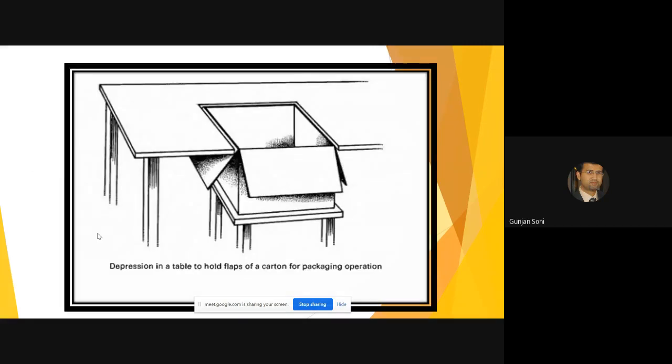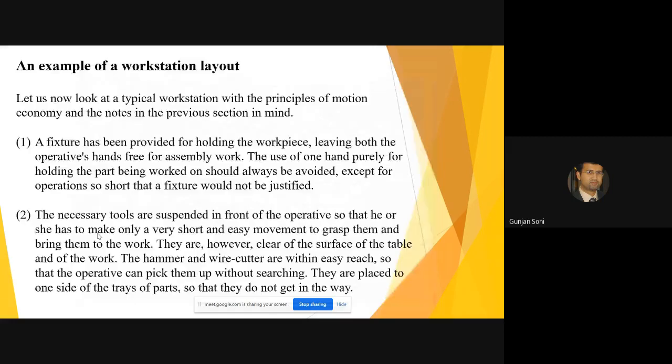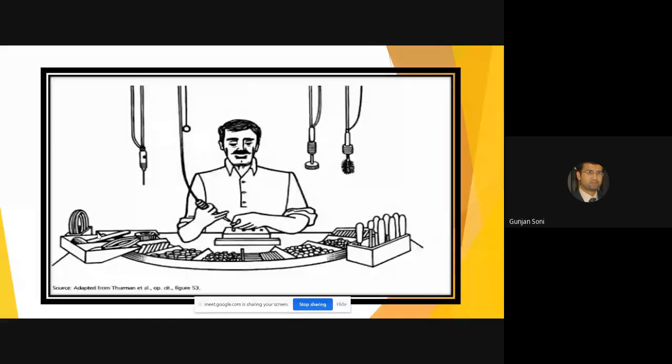They're saying this is kind of a chute that they were talking about. If you have to drop the finished part, then it should be something like this. An example of a workstation layout. You can see that various things that we were talking about earlier could be seen over here. For example, a fixture has been provided for holding the workpiece.